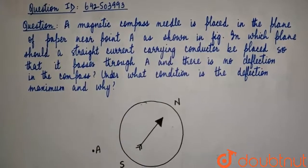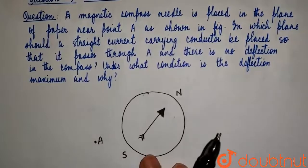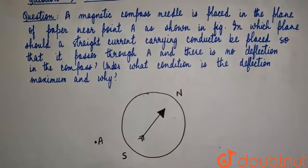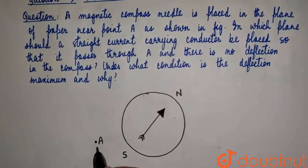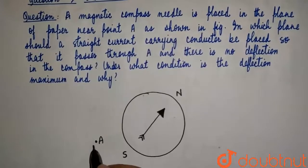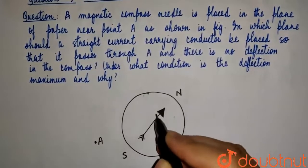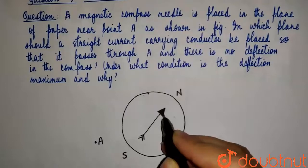So we have a compass that is placed in the plane of paper. The question is asking us — there is a straight current-carrying conductor and it passes through A. In which plane should we keep that conductor so that there is no deflection in the needle of the compass?